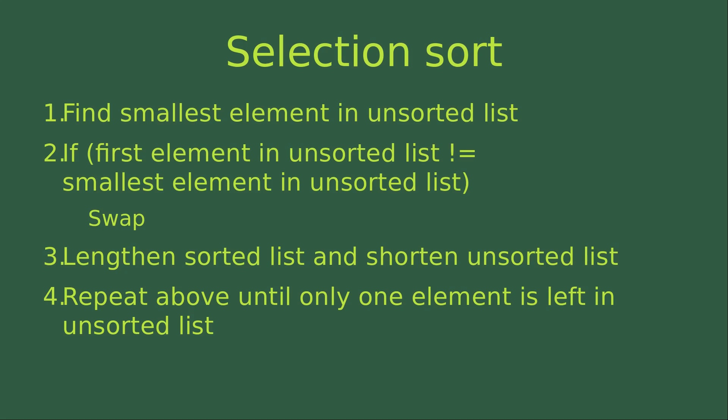It involves mainly four steps. First, we find the smallest element in the unsorted list, which is part of the given list of numbers to be sorted.